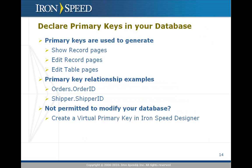Step five is to declare primary keys in your database. IronSpeed Designer uses primary keys to generate certain types of pages such as show record, edit record, and edit table pages — all of which require an individual record to be selected and fetched by unique ID or by name. Without a primary key, it's not possible to do any editing or to show an individual record; you can only fetch them in aggregate.